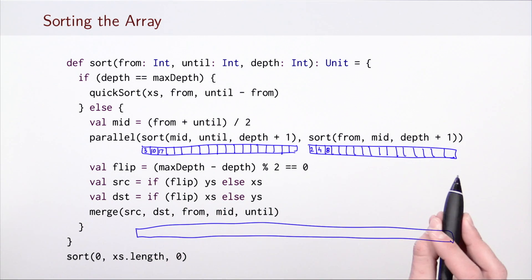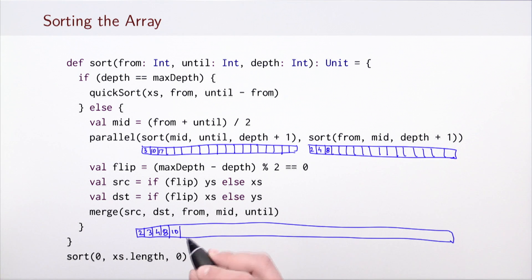So we will have two disjoint segments of the array, each of which contains a sorted list of some elements. Now we would like to merge these two segments into one larger segment that is still sorted. We will do this merge using the call to merge, which needs to copy the elements from the original segments into a new one. For that we will use the auxiliary storage.